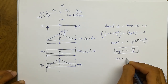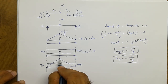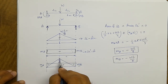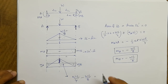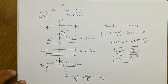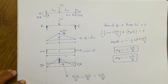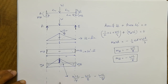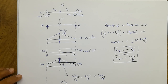Similarly, the value of MB is also WL/8 since the beam is symmetrically loaded. Now this mid-span coordinate is WL/4 minus WL/8 which equals WL/8. So the final bending moment diagram has WL/8 at both ends (negative) and WL/8 at mid-span (positive). This is how we find out the bending moment diagram for a fixed beam.